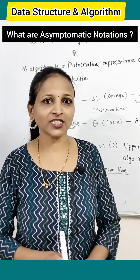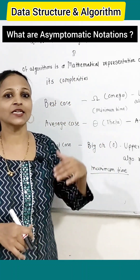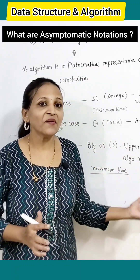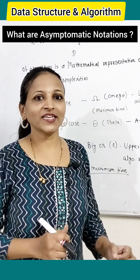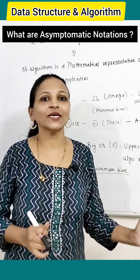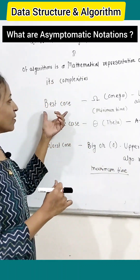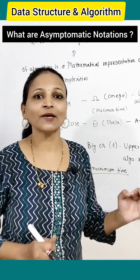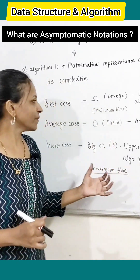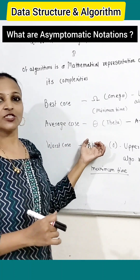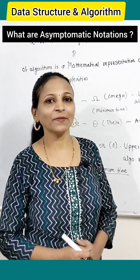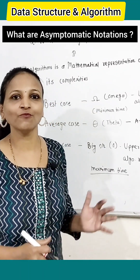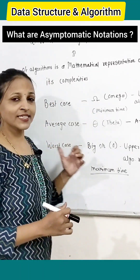There are three notations used for representing best case, average case, and worst case complexities. The best case time complexity or space complexity can be represented with the help of omega notation — that is nothing but minimum time or space taken by an algorithm. To represent average case time complexity or space complexity, theta notation can be used — that is nothing but average time or space taken by an algorithm for its execution.